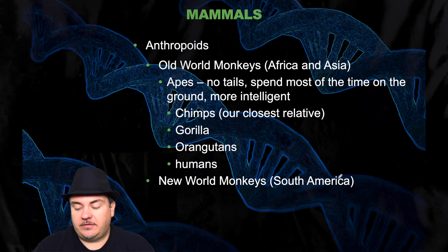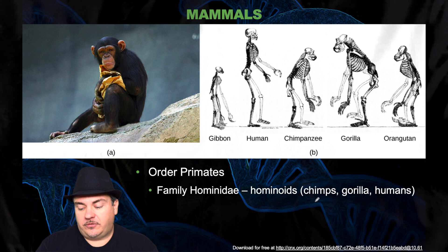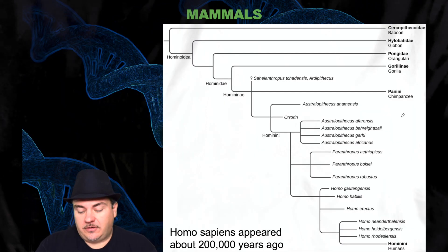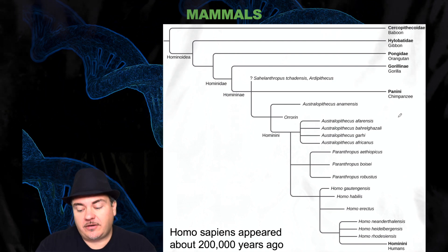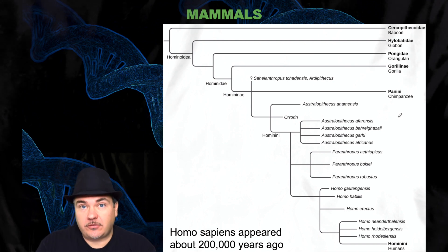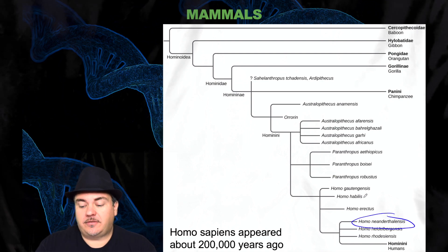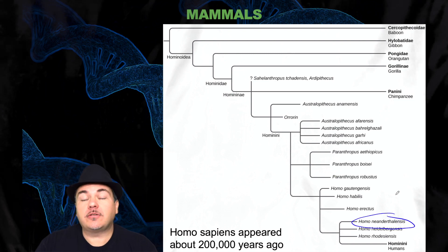Within the order of primates you have the hominids or hominoids, which are the chimps, gorillas, and humans. Of interest, humans — in particular the species Homo sapiens — appeared about 200,000 years ago. However, we are not the only human-like organism to have lived on this planet. You've probably heard of another related species called Neanderthals, Homo neanderthalensis. But there were many different human-like hominids that lived on this planet — Homo neanderthalensis, Homo erectus, Homo habilis, etc. These are all basically early human ancestors.